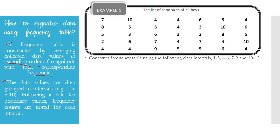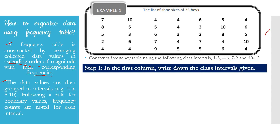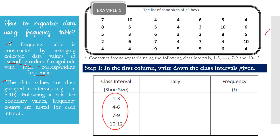Let us try to construct a frequency table using this data. For step 1, in the first column we write down the class intervals given. In this case, the class intervals are 1 to 3, 4 to 6, 7 to 9, and 10 to 12.